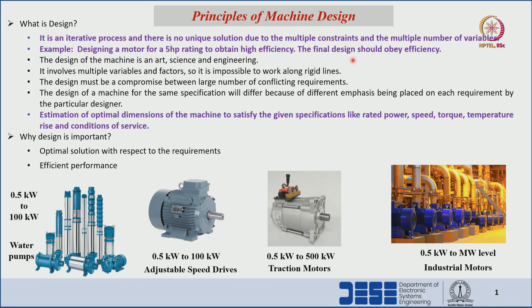We have to compromise between a large number of conflicting requirements. For example, if we want to design a machine for higher efficiency, higher torque density, higher power density, and better thermal cooling — with multiple requirements present, the design procedure becomes complex. So we have to compromise: if only higher efficiency and higher torque density are required, we compromise on the remaining requirements to get a solution.